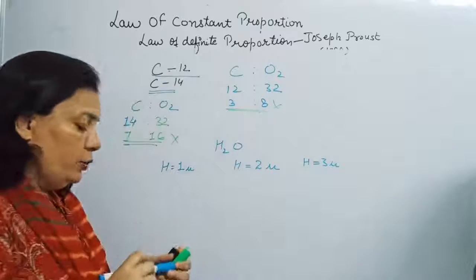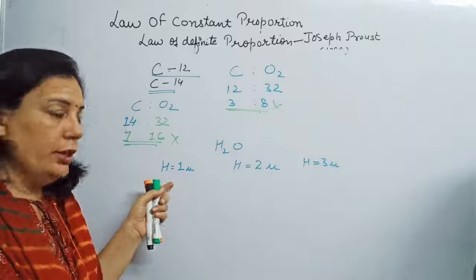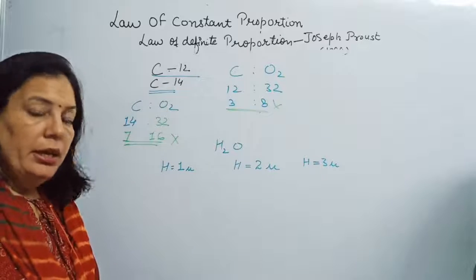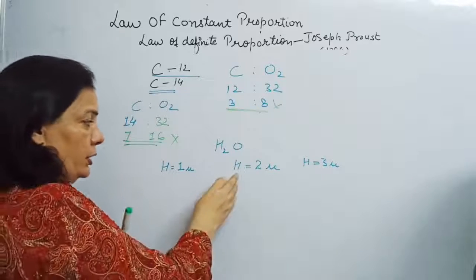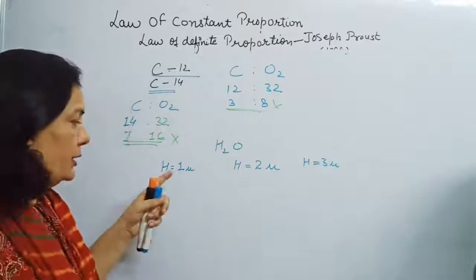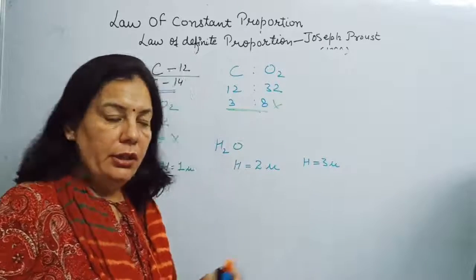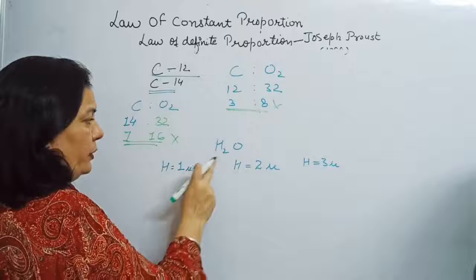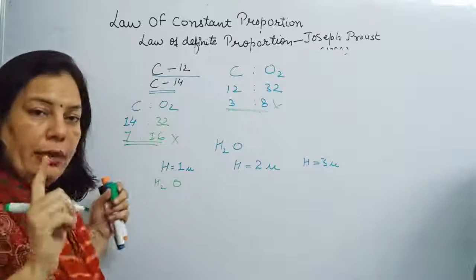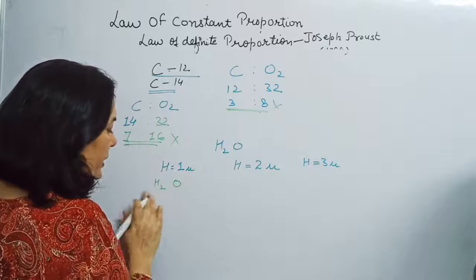It is not necessary that only protium (H-1) reacts with oxygen to form water. It is possible that deuterium (H-2) or tritium (H-3) also reacts. If protium reacts with oxygen, then the ratio of hydrogen to oxygen in one molecule of water is 1:8.